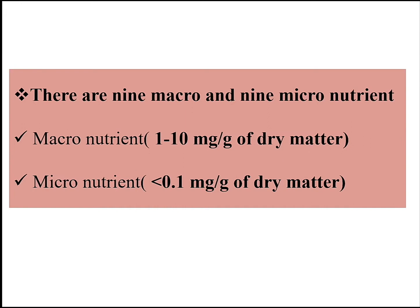There are 9 macronutrients and 9 micronutrients. Macronutrients are those nutrients which are found in dry matter in the amount of about 1 to 10 mg per gram. And micronutrients are those nutrients which are found in dry matter in the amount of less than 0.1 mg per gram.